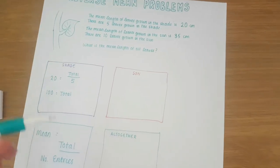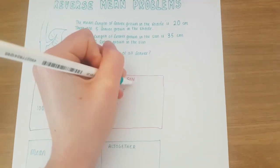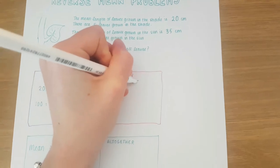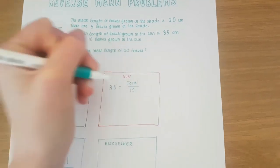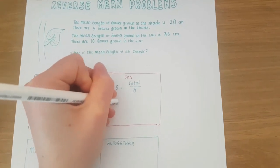For the mean length in the sun we have 35 and that equals the total over 10 because that's our number of entries. If you multiply both sides by 10 we get 350 as our total in the sun.